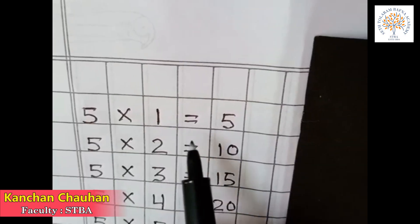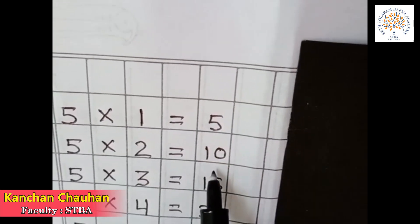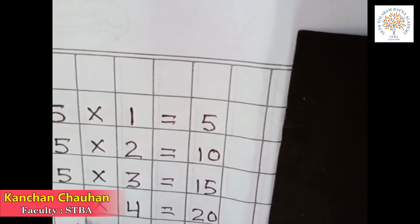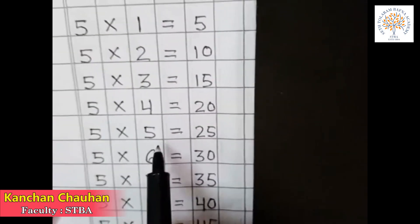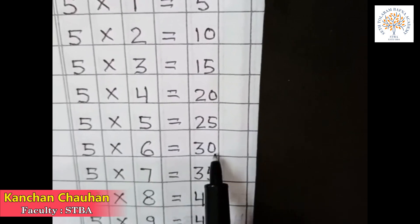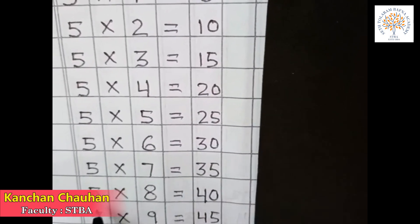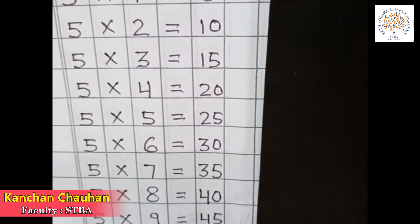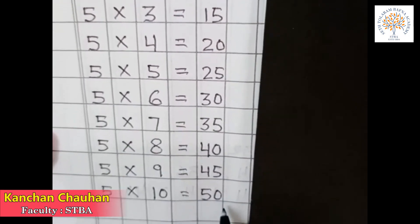5 1s are 5, 5 2s are 10, 5 3s are 15, 5 4s are 20, 5 5s are 25, 5 6s are 30, 5 7s are 35, 5 8s are 40, 5 9s are 45, 5 10s are 50.